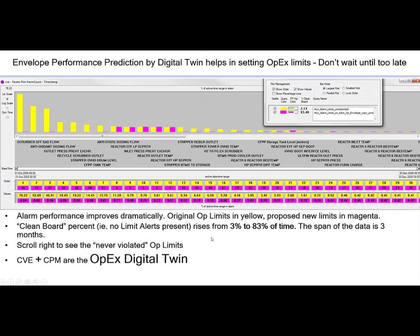If you want to go beyond this to predicting results, you would add our CPM product and take yourself into real time. That gives you a real-time model of an operating envelope which can show the operator that they're actually going to violate an OPEX limit in some future time if they don't make a change — and mostly you have plenty of time in that prediction to act. These are available now, and to build these kinds of models you don't need any mathematics, which means many more people in your organisation will feel comfortable using them. Come and see. Thank you for your time.